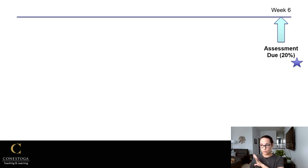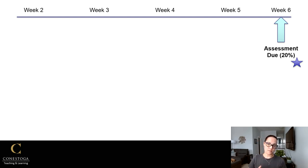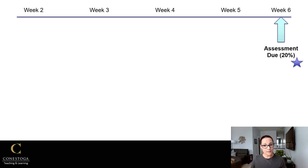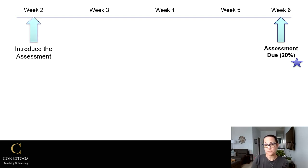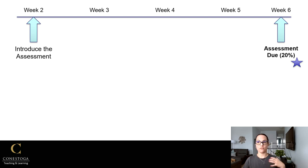Let's backtrack. If week six is the deadline, when do we start talking about this assessment? Week one of the semester is overwhelming for students and faculty alike — we cover the overall evaluation plan from the course outline and use the instructional plan. Going into specifics about a particular assignment in week one would be too much, so for a significant assignment we'd introduce it in week two. How you do this depends on the modality of your course.